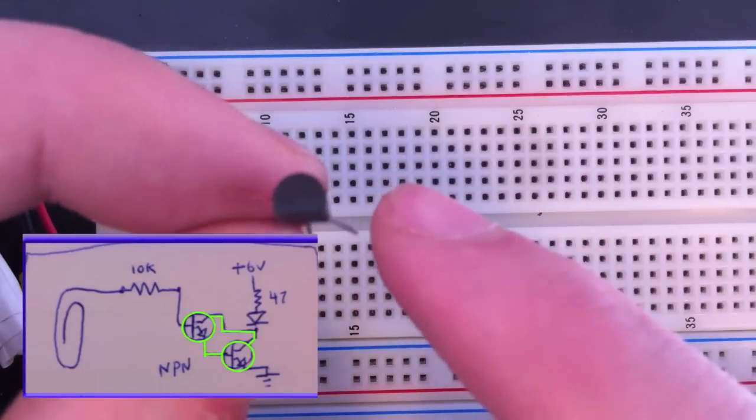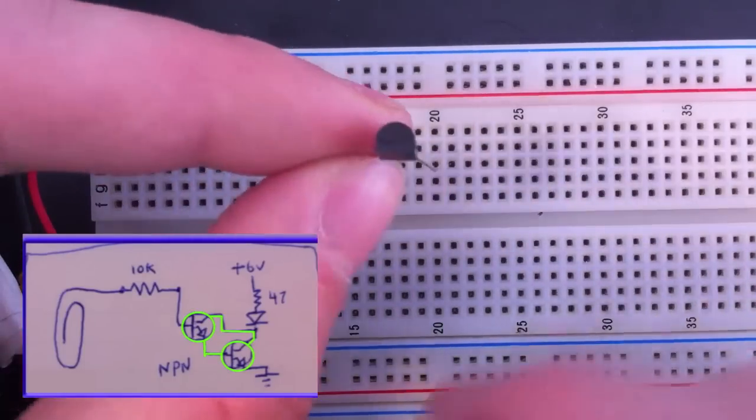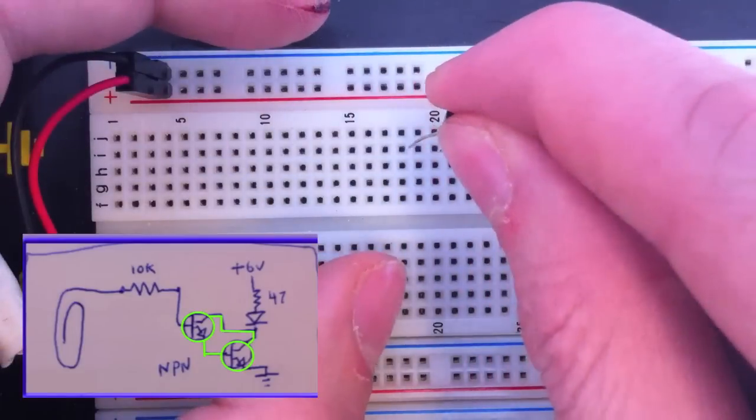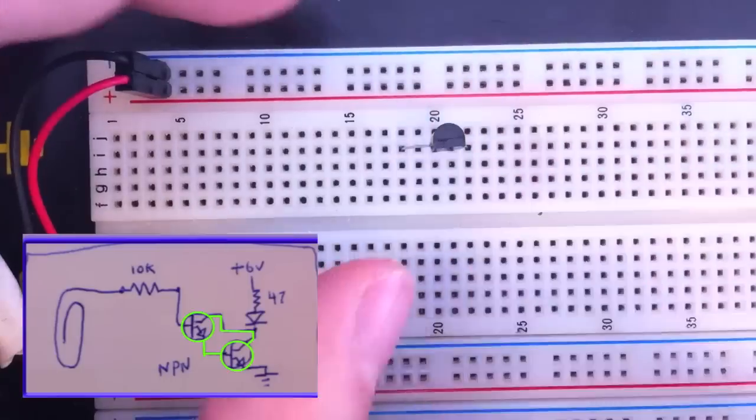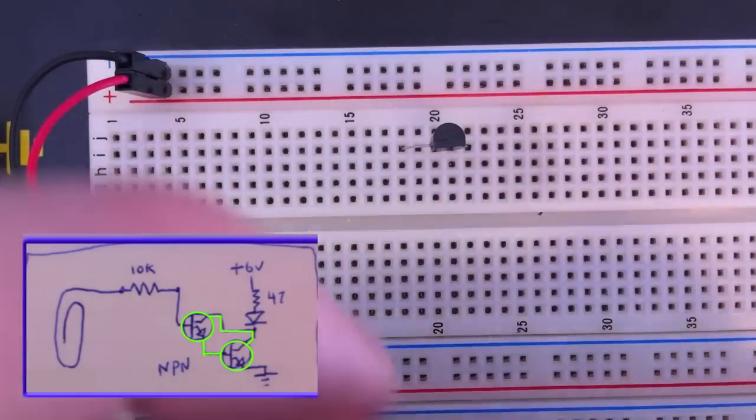the collector would be on your right side. So let's place this and get our second transistor.